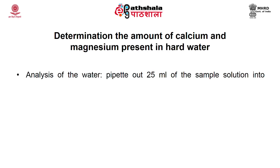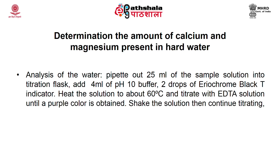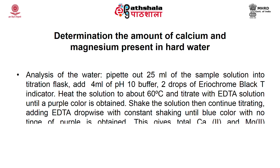Analysis of water — total hardness procedure: pipette out 25 ml of sample solution into a titration flask. Add 4 ml of pH 10 buffer and 2 drops of Eriochrome Black T indicator. Heat the solution to about 60°C and titrate with EDTA solution until a purple color is obtained. Continue titrating, adding EDTA dropwise with constant shaking, until a blue color with no tinge of purple is obtained. This gives total calcium and magnesium concentration.